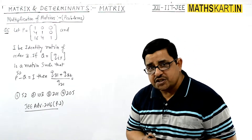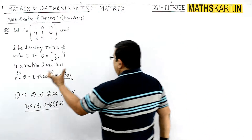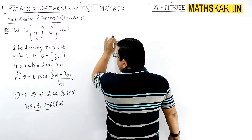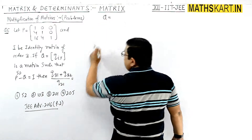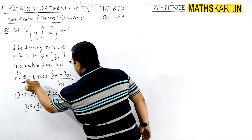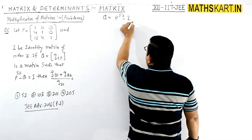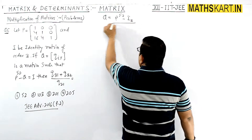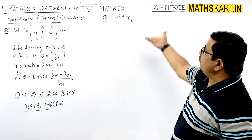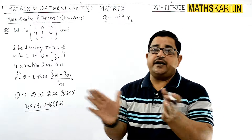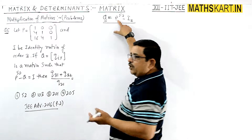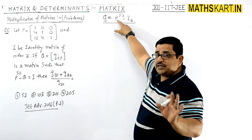First we need to find P to the power 50. Q equals P to the power 50 minus I, the third order identity matrix. So to find matrix Q, we need to find P to the power 50.